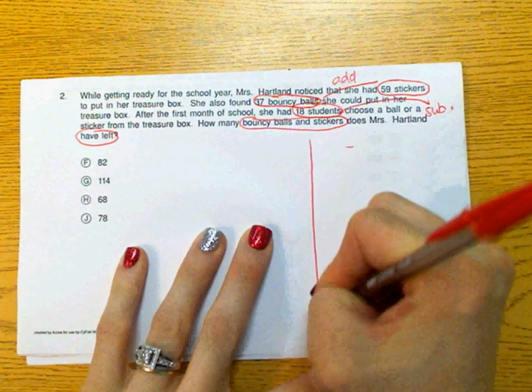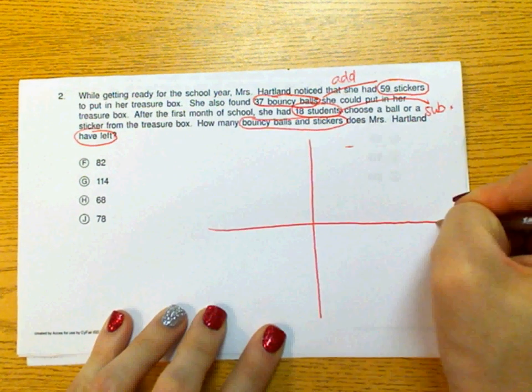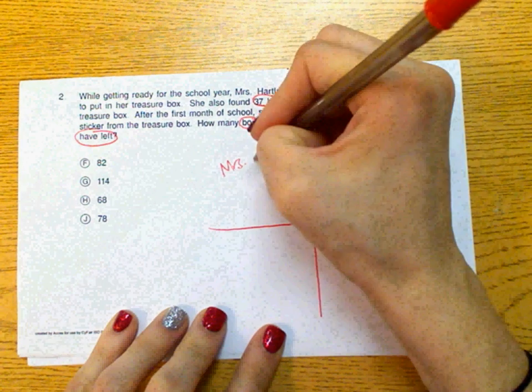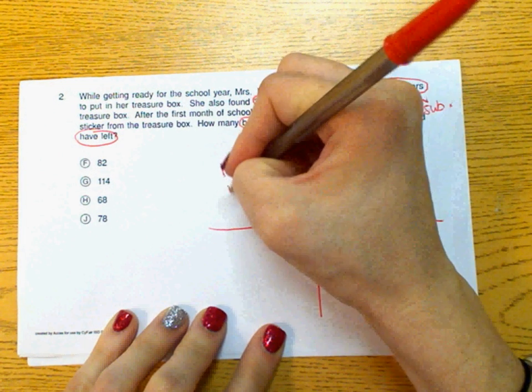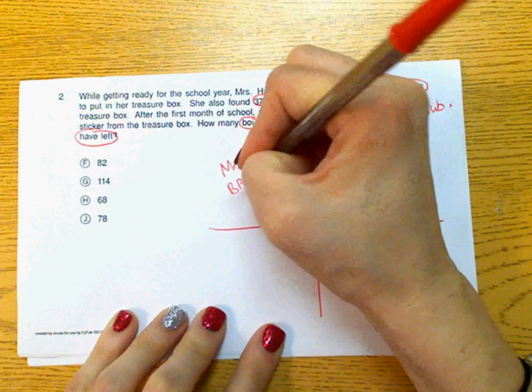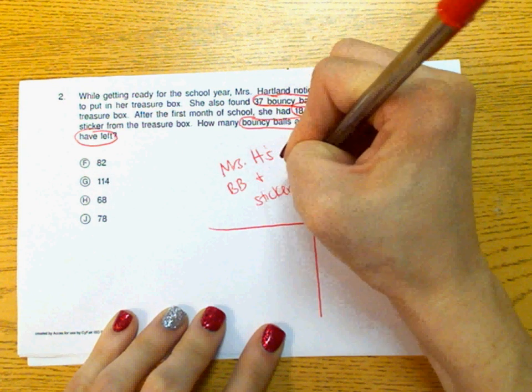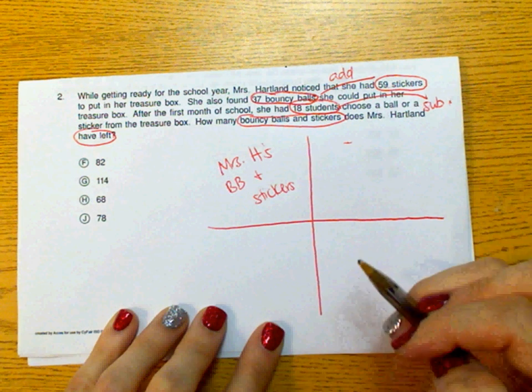We're going to start our window pane. We're looking for Mrs. Hartland's bouncy balls and stickers. And I tell the students they're welcome to abbreviate anything that they would like.